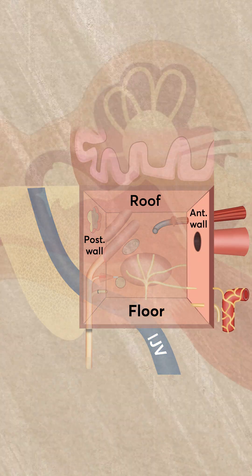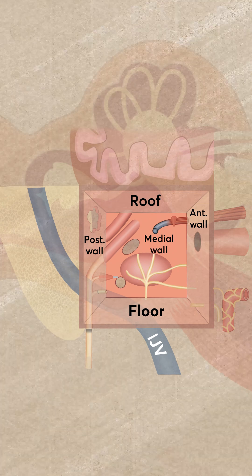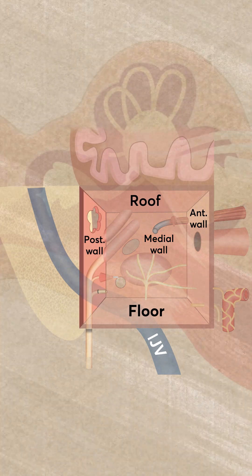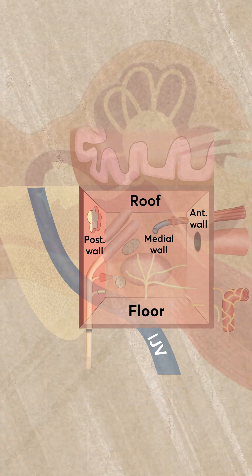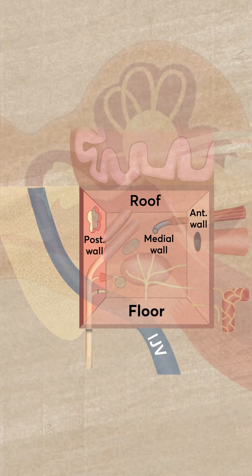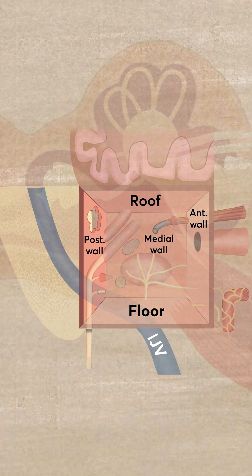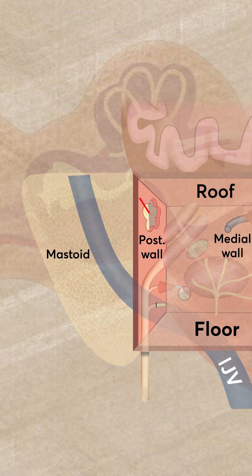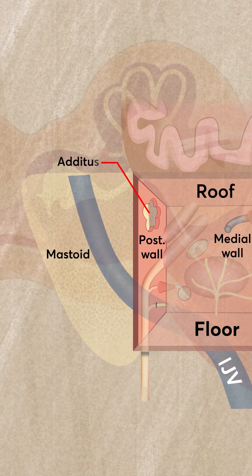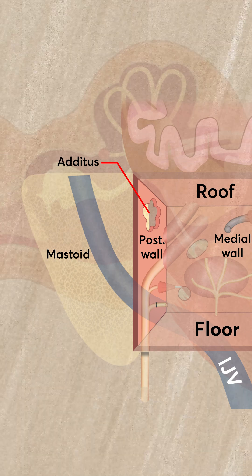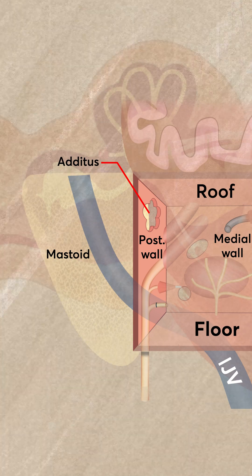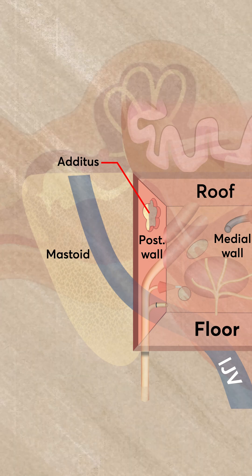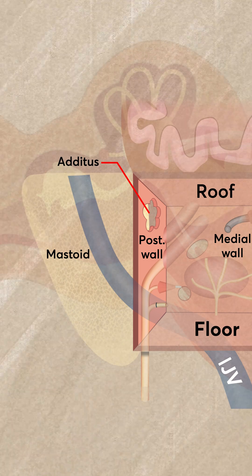We have the posterior wall, the anterior wall, and the medial wall. Now the posterior wall of the middle ear has got two important structures. The posterior wall is separating the middle ear from the mastoid, so it has got the aditus, which is a communication between the middle ear and the mastoid air cells behind. That communication is called the aditus ad antrum.